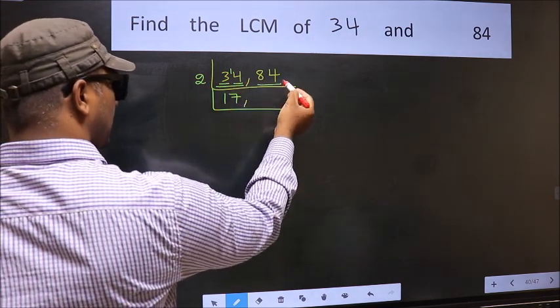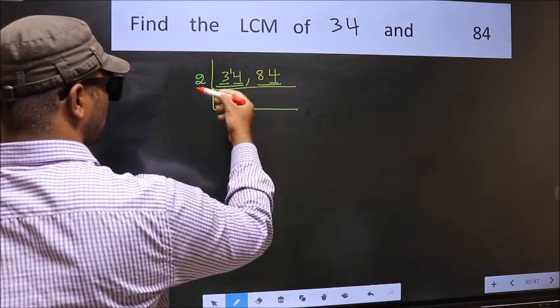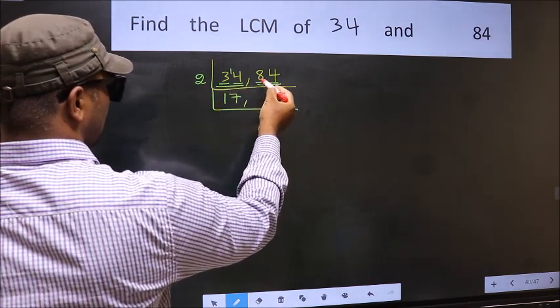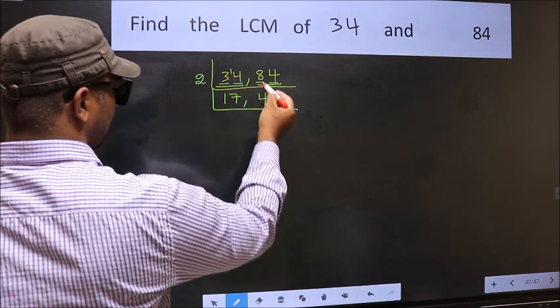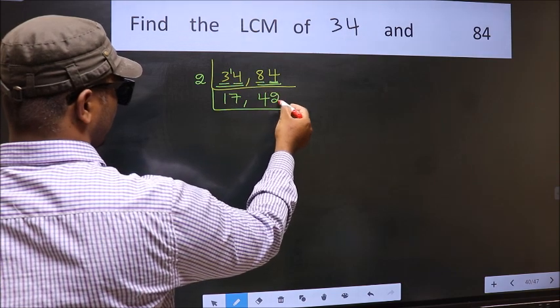The other number 84, last digit 4, even so this is divisible by 2. First number 8, when do we get 8 in 2 table? 2×4=8. The other number 4, when do we get 4 in 2 table? 2×2=4.